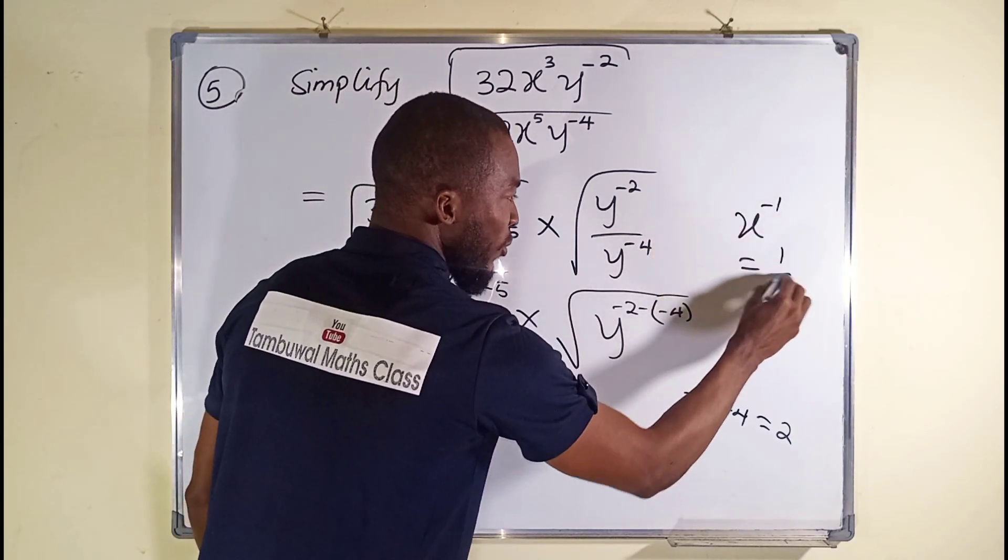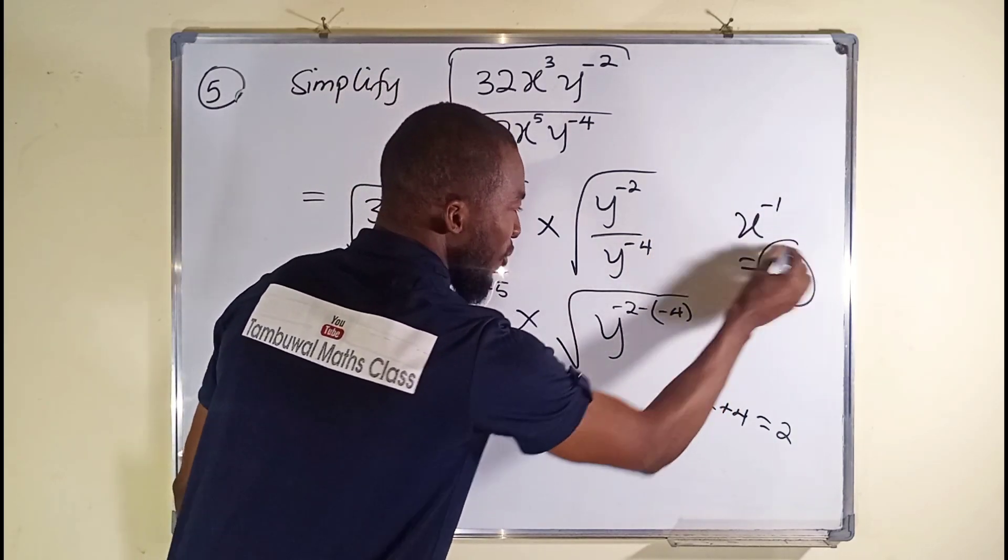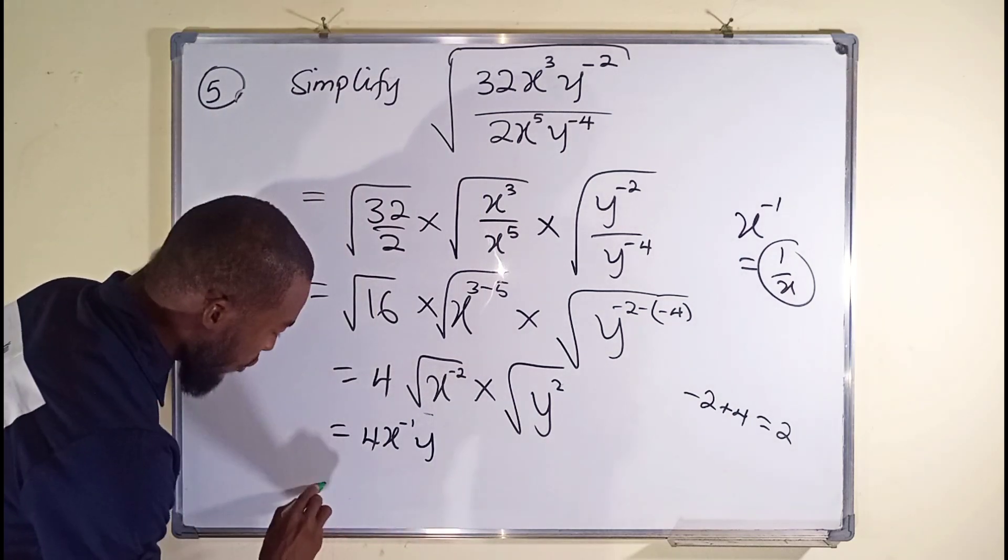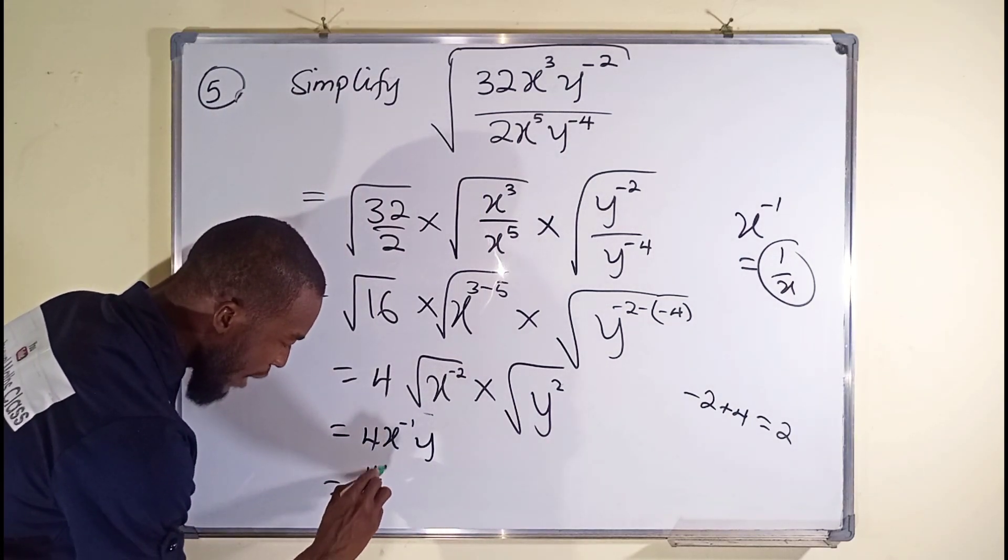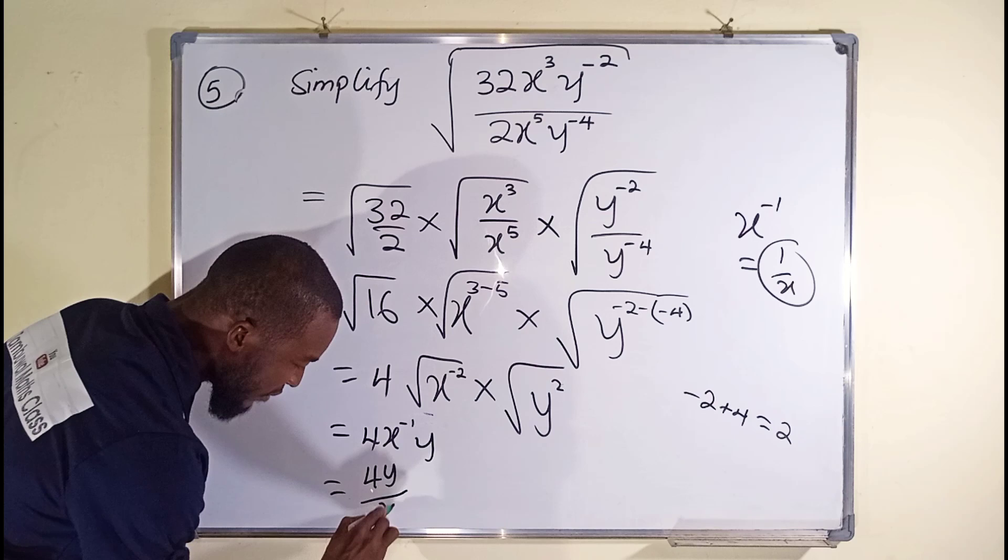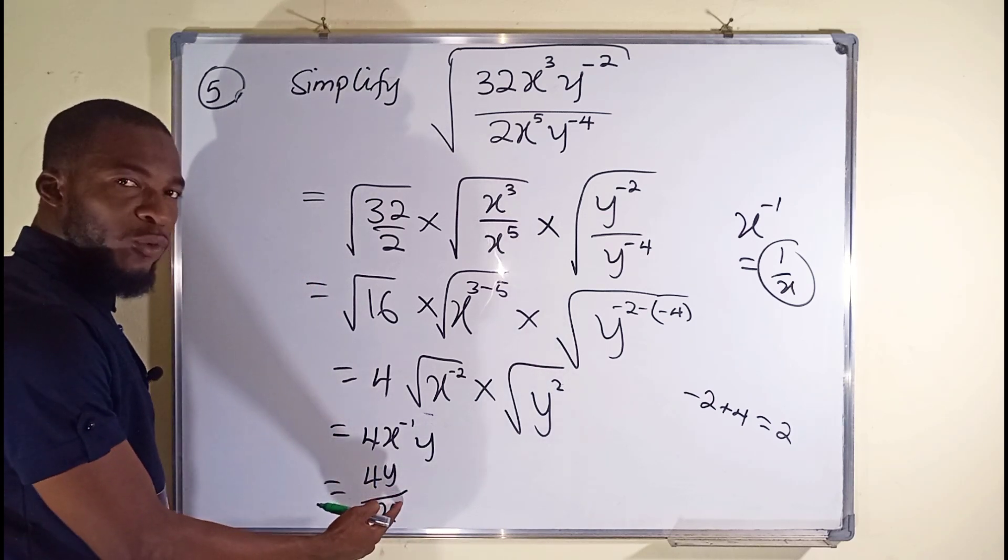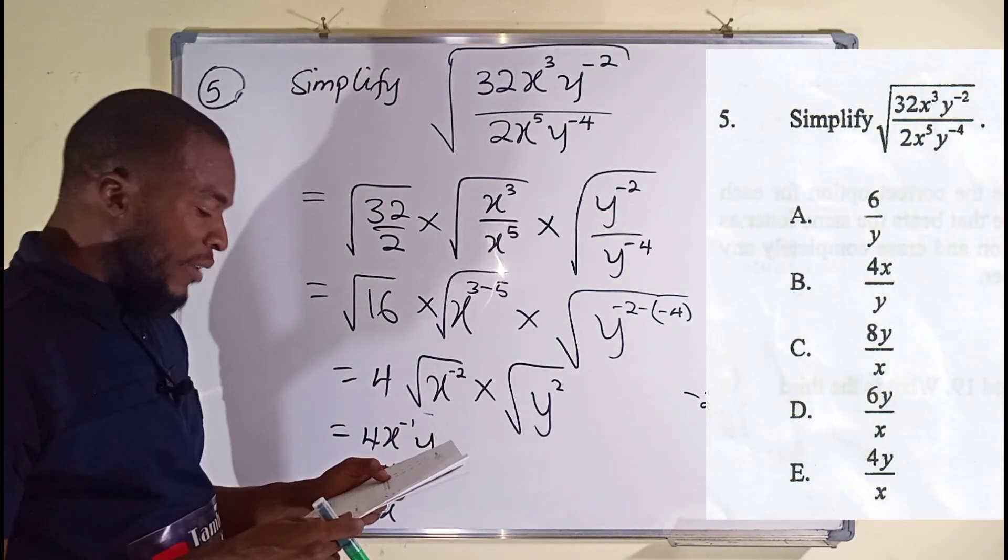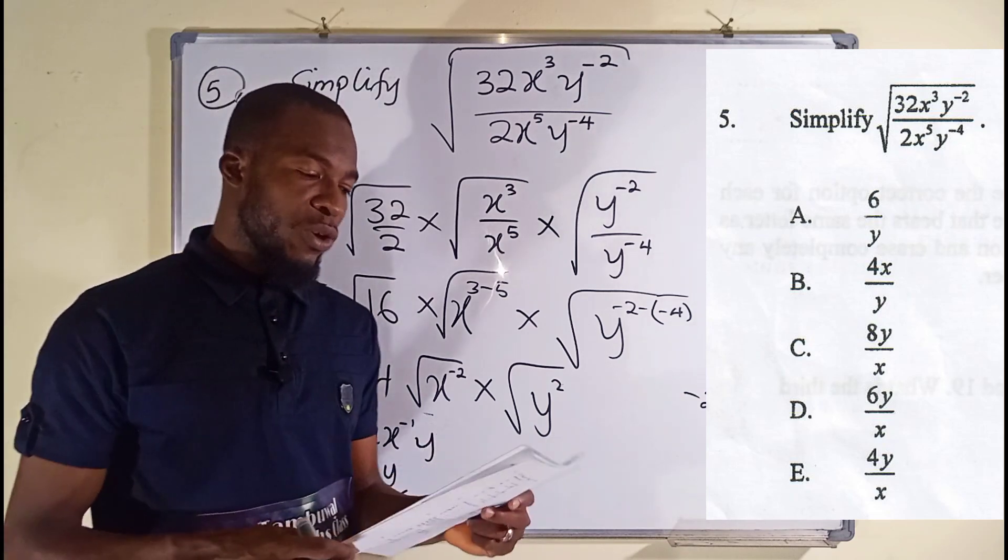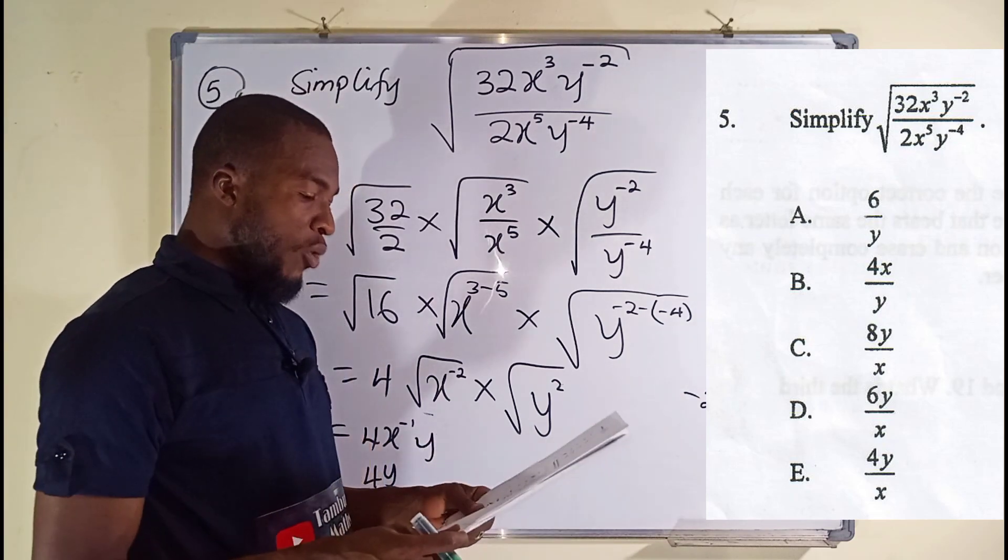If you have x to the power of negative 1, it's the same thing as 1 over x, so they transform it into this in such a way we are going to have 4y over x, and now we have no power of x, and it is the last option e from question number 5.